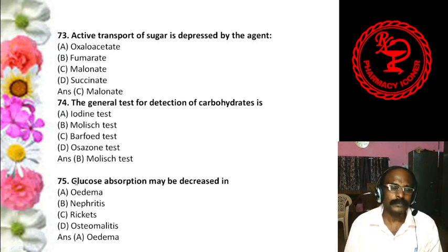Question 39: Which of the following is a non-reducing sugar? Isomaltose, Maltose, Lactose, or Trehalose. The answer is trehalose. Maltose, isomaltose, and lactose are reducing sugars. Non-reducing sugars include sucrose and trehalose.